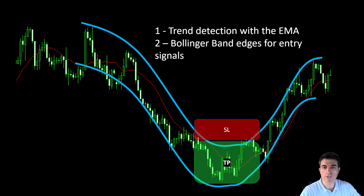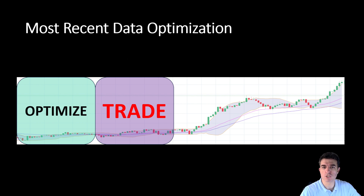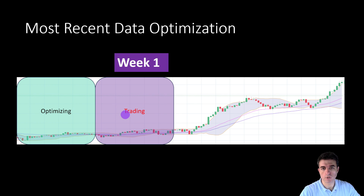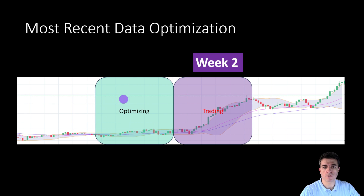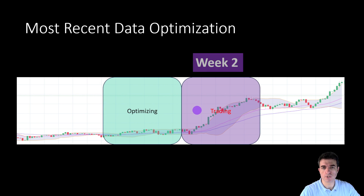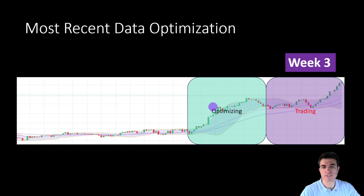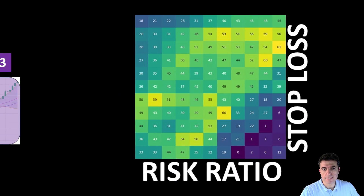The optimization process will backtest the returns for different stop loss and take profit distances using the most recent price data. For example, we aim to optimize on the data of the last week and then trade for the current week, and so on. We keep applying this process — optimizing on the most recent data, the last couple of weeks, then trading for a week or so, then optimizing again on the current data and trading in the future.